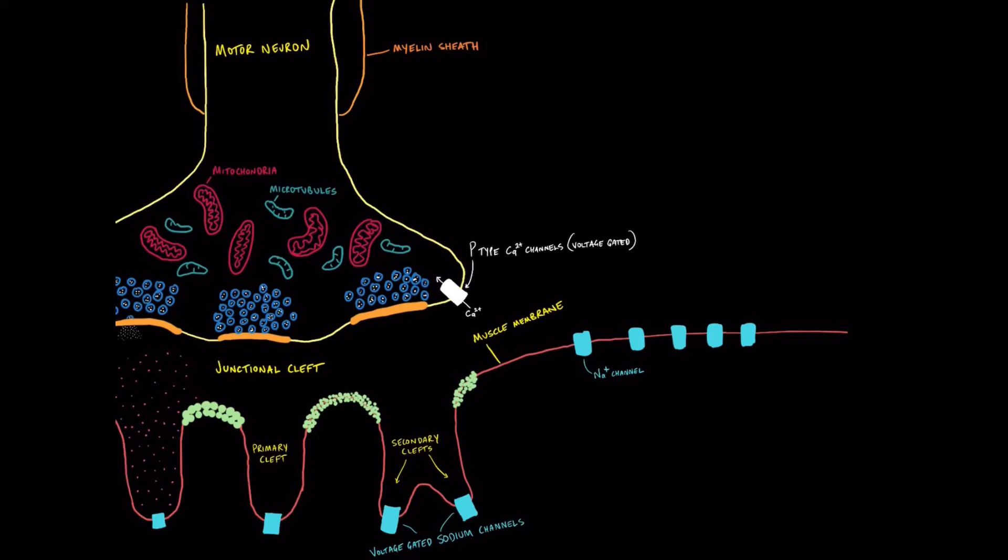open and allow calcium to flood in down its concentration gradient. The calcium then interacts with those vesicles that we talked about, causing them to migrate towards the active zones and release their quanta of acetylcholine into the neuromuscular junction. So calcium is super important.